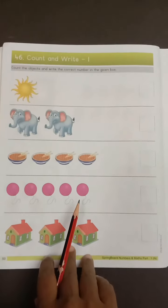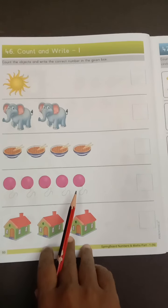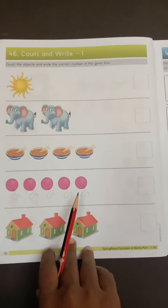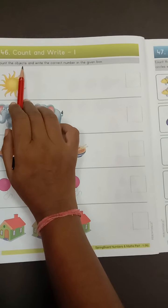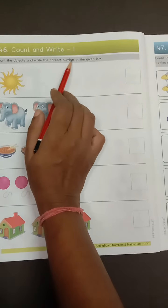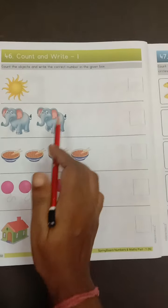So now what are we going to do? Count and write one in the box. Count the objects and write the correct number in the given box.